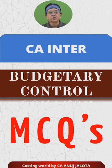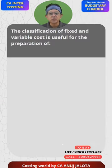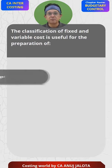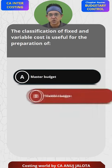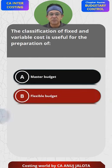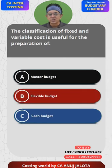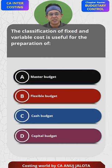Center budgetary control MCQs. The classification of fixed and variable cost is useful for the preparation of: A) master budget, B) flexible budget, C) cash budget, and D) capital budget.